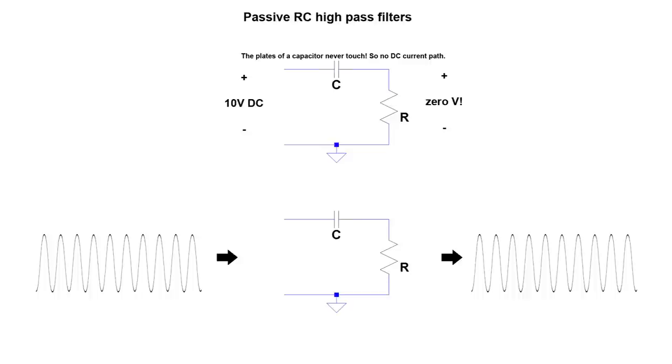Also, series capacitors block DC. After all, they're just parallel plates that never actually touch each other, and in the DC steady state, they're basically an open circuit, so you get zero volts on the output.